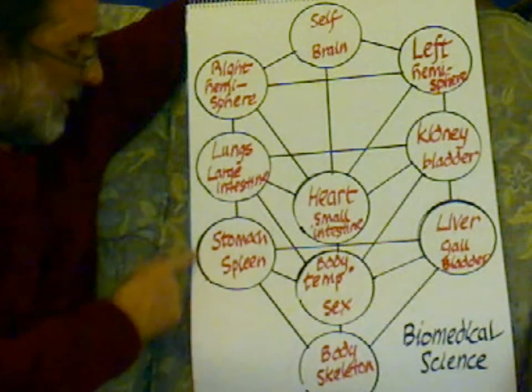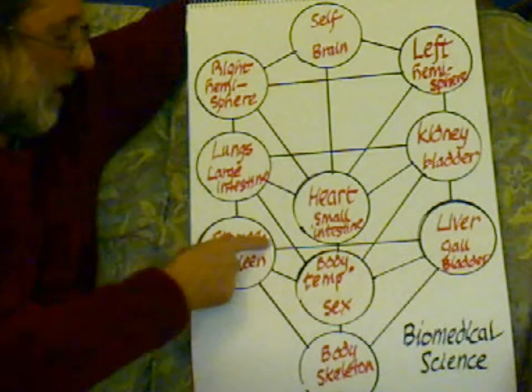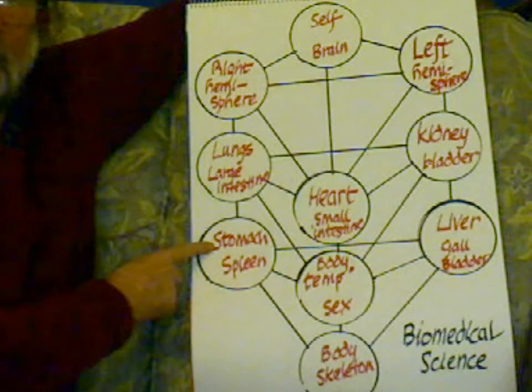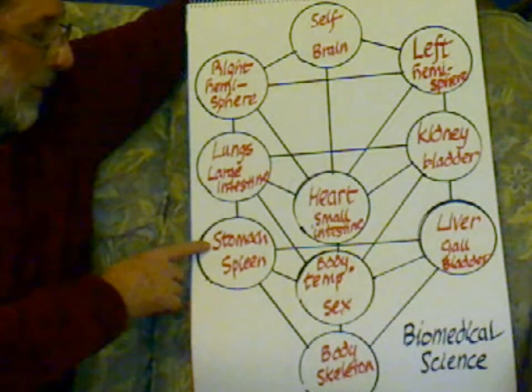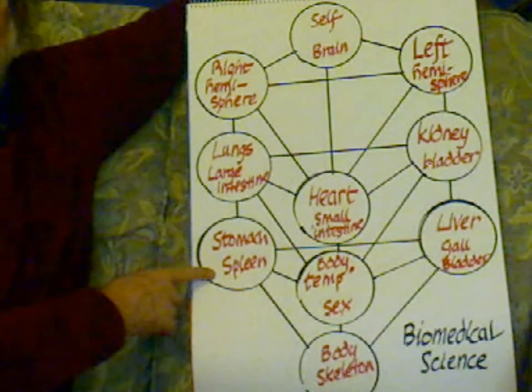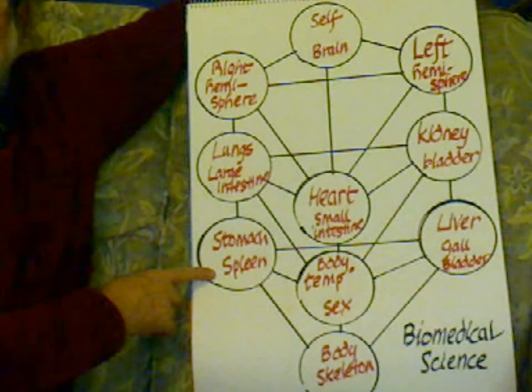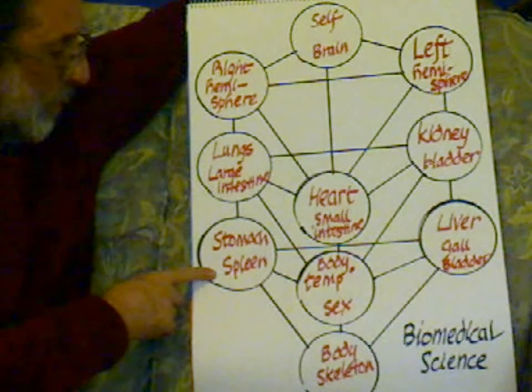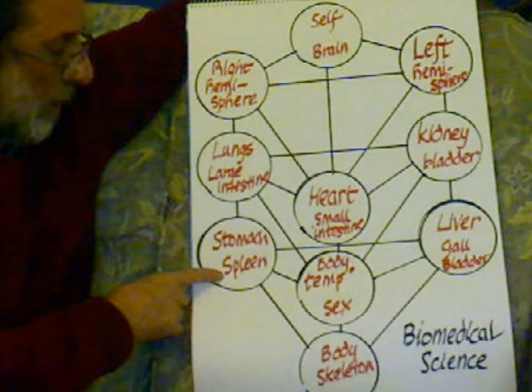Here we have taste, which obviously we taste, and it leads into our stomach. And the stomach needs the spleen in order for the food to be absorbed by the flow of blood.